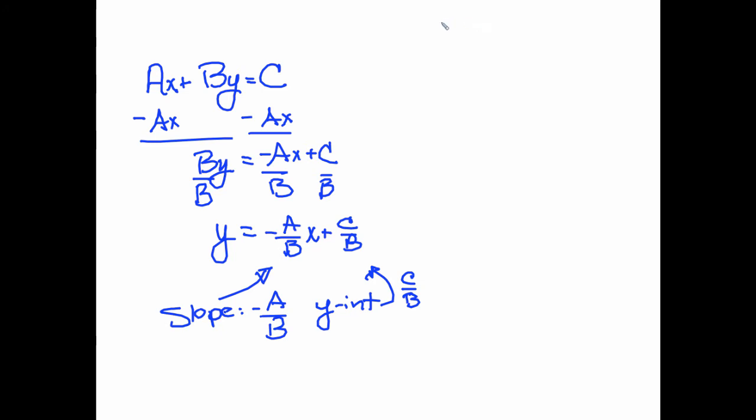So let's take 4x plus 11y equals 15. In this case, the 4 is a, the 11 is b, the 15 is c. And it says here that the slope is negative a over b, so that the slope of this line would be negative 4 over 11. And the y-intercept is c over b. That's 15 over 11.